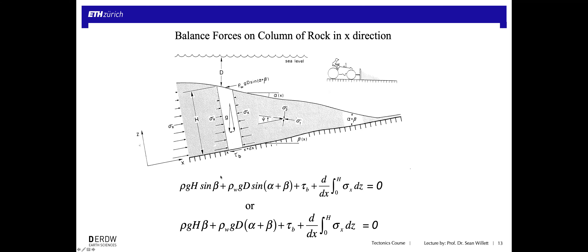I can then simplify that force balance expression. If you know something about geometry, you can see that I've gotten rid of all the sines by applying the small angle approximation: if the angles alpha and beta are small, the sine of the angle is approximated by the angle itself. Get out your calculator, take the sine of one or two degrees — you'll get essentially the same number back as the angle in radians. That makes things a little bit simpler and gets rid of a lot of the trigonometry.